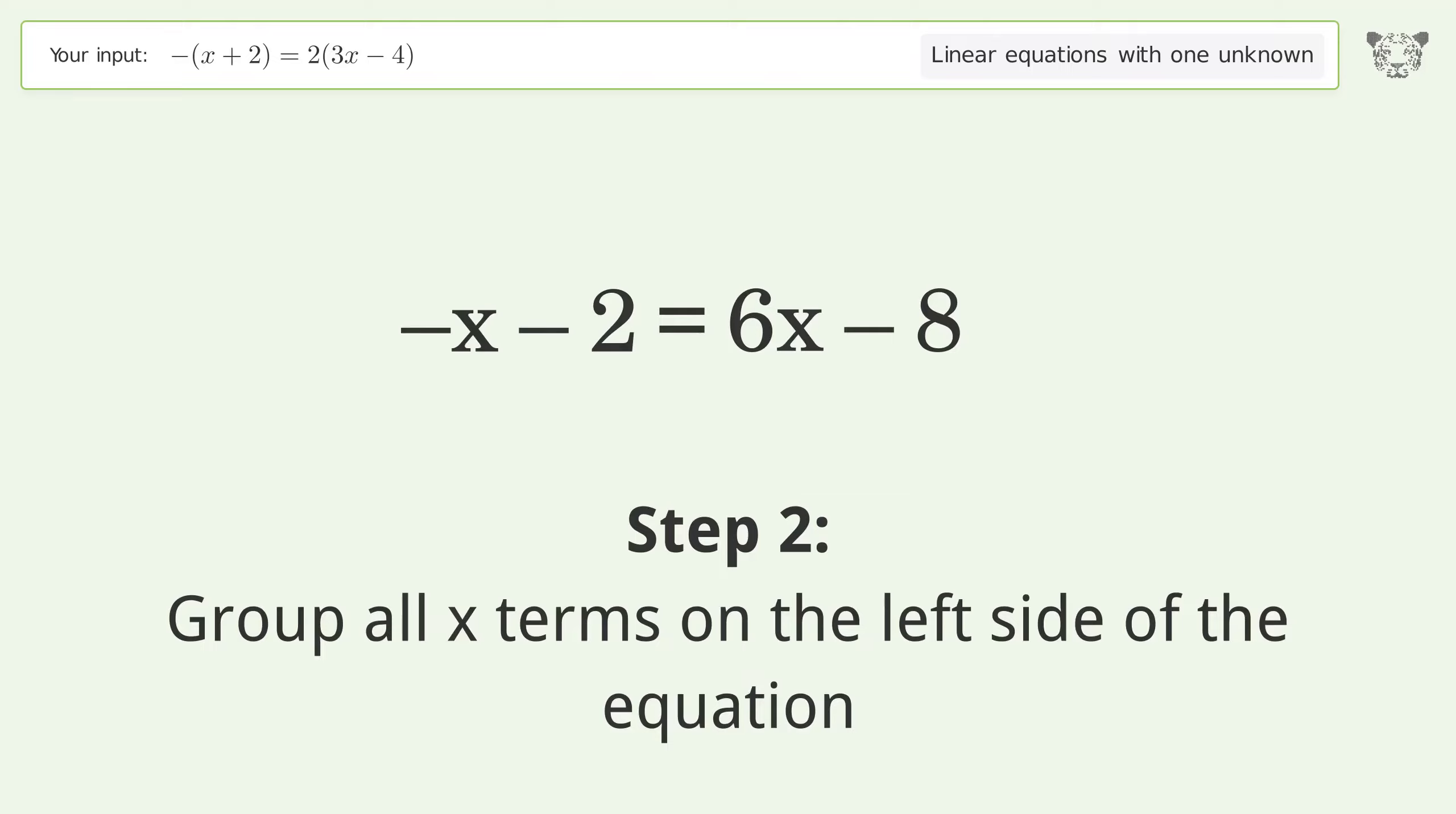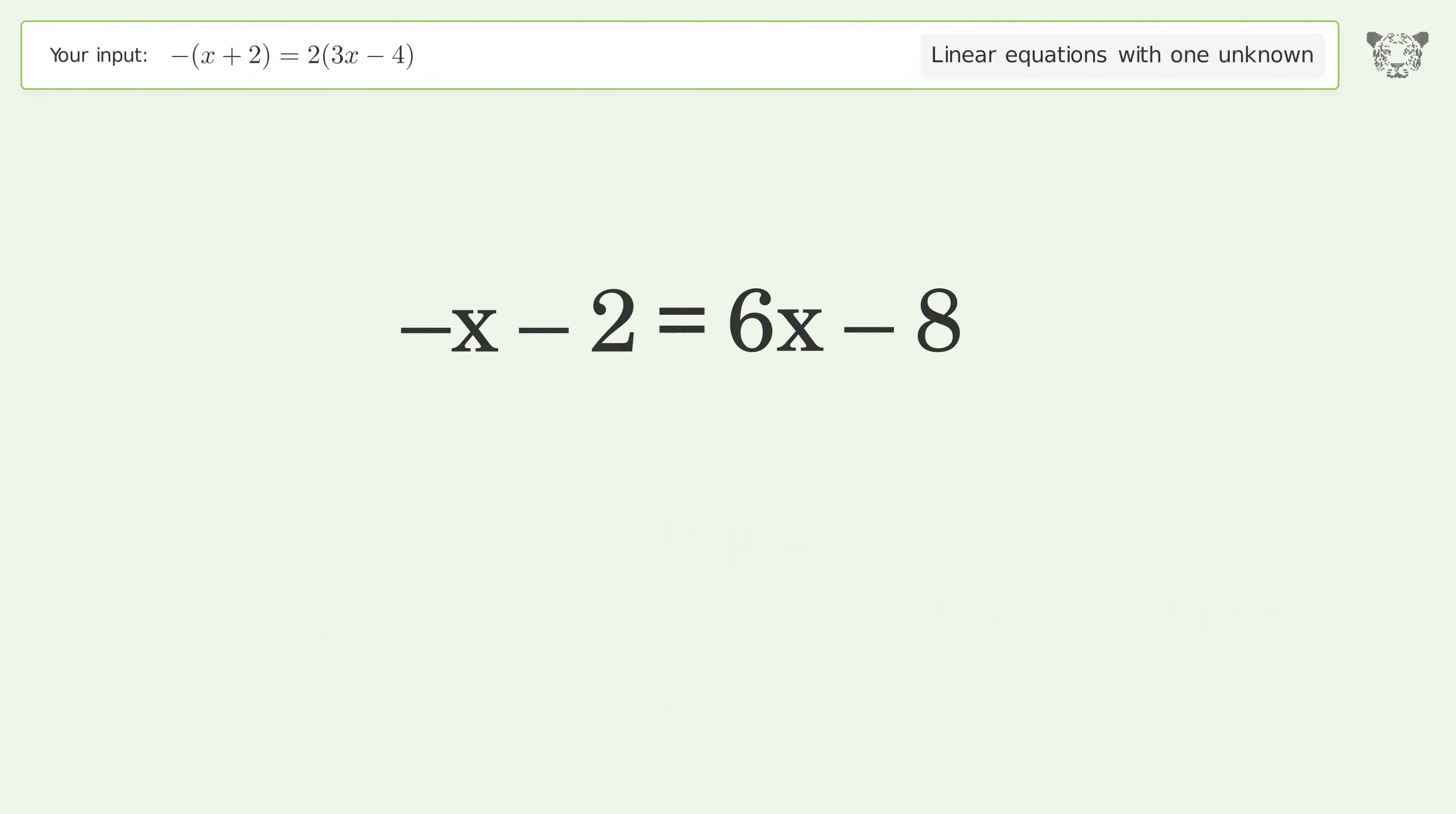Group all x terms on the left side of the equation. Subtract 6x from both sides. Group like terms. Simplify the arithmetic.